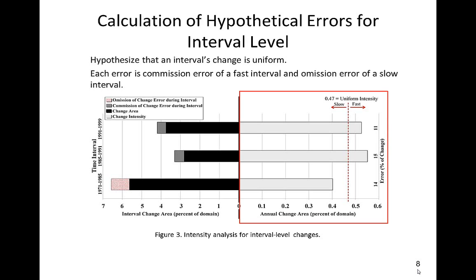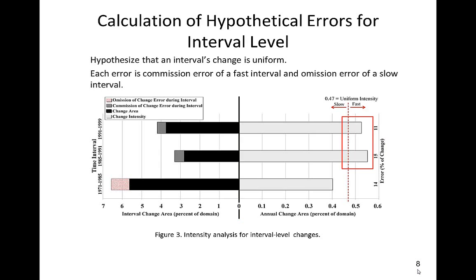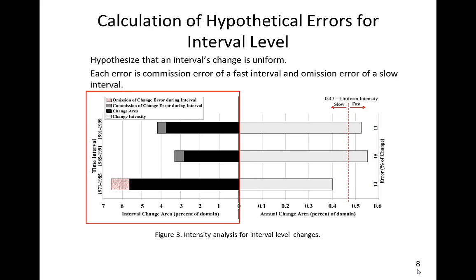The right side of the chart shows the intensity of changes for each time interval. We can see that annual change is fast during 1981 to 1985 and 1991 to 1999, and is slow during 1971 to 1985. The left side of the chart shows the hypothetical errors that could explain the observed deviations from the uniform line. Commission of change errors could explain fast intervals because the maps of change apparently show more change than the uniform intensity implies. Omission errors could explain slow intervals because the map of change shows less change than the uniform intensity implies.